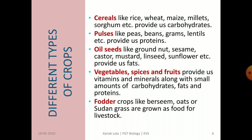Cereal crops provide us carbohydrates, whereas pulses provide us protein. We get fats from oilseeds. Vitamins and minerals, along with small amounts of carbohydrates, fats, and proteins, are obtained from vegetables, fruits, and spices crops.